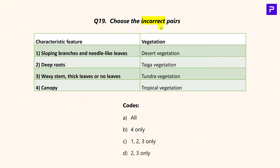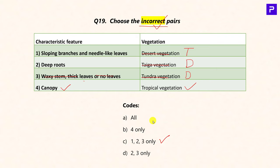Question 16 (previous prelims): Choose the incorrect pairs. Sloping branches and needle-like leaves — adaptive mechanism in taiga vegetation. Deep roots — adaptive mechanism in desert vegetation. Waxy stems, thick leaves or no leaves — adaptive mechanism in desert vegetation. Canopy — a feature of tropical vegetation, not incorrectly paired. Since the question asks for incorrect pairs, only point 4 is correctly paired; the answer is 1, 2, and 3 only — option C.